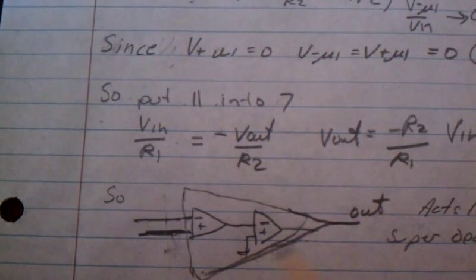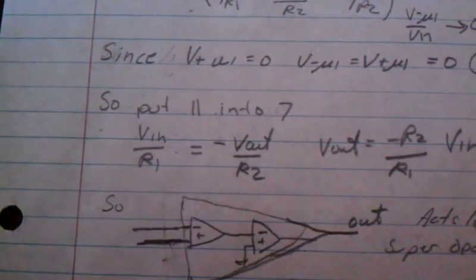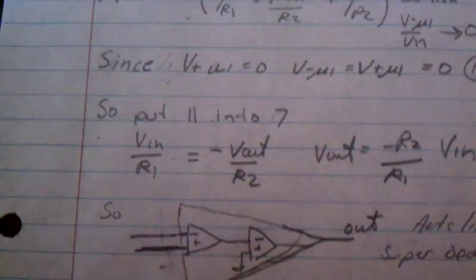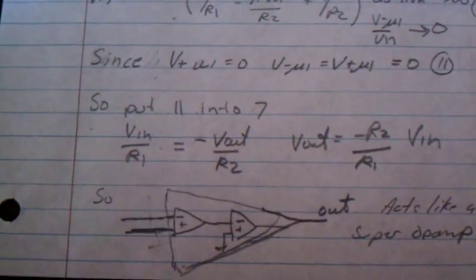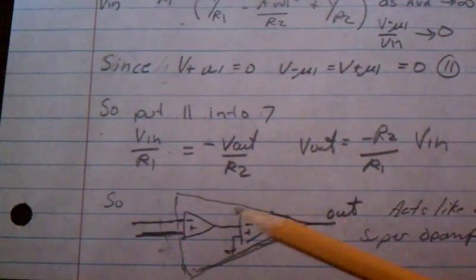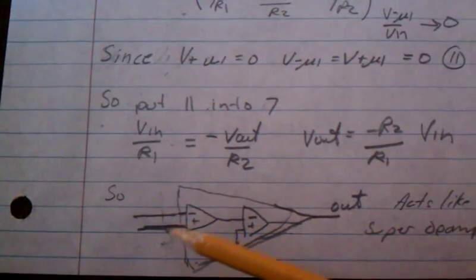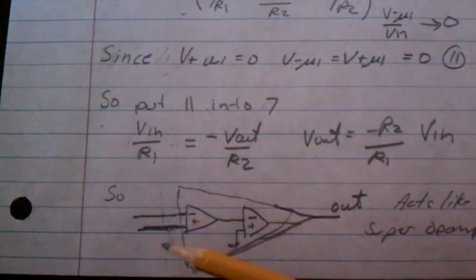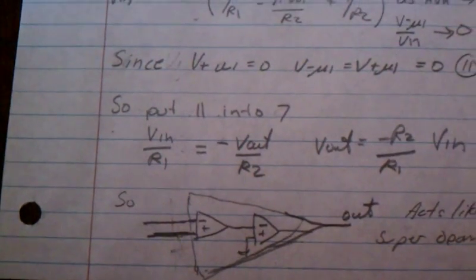So if you're asked to derive why these two voltages, these two nodes, are equal to each other, yes you need this full-blown derivation.